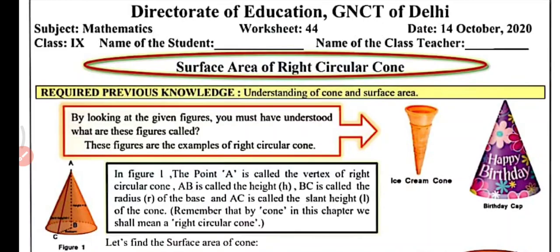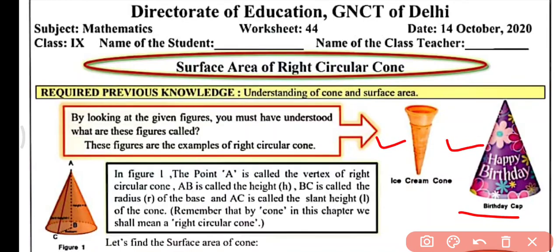By looking at the figures, you must have understood what these figures are called. As you can see on the screen, we have two figures like an ice cream cone and a birthday cap. These figures are examples of right circular cone, and there are many more examples in our daily life that are of right circular cone shape.